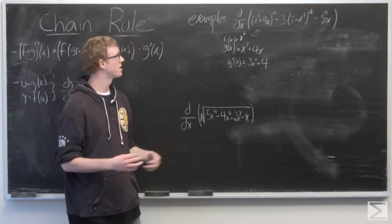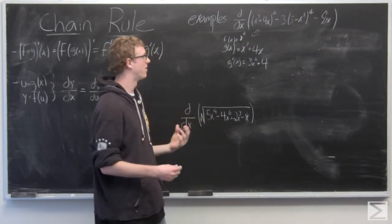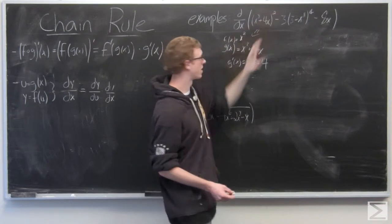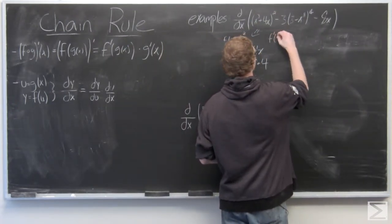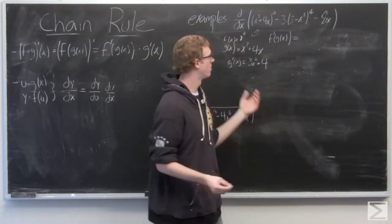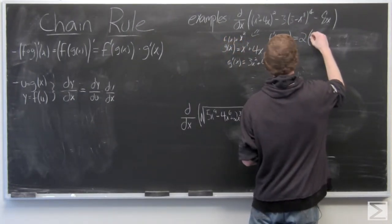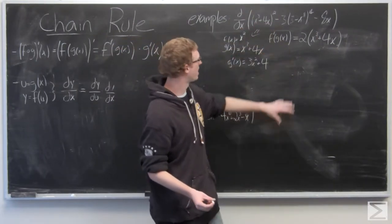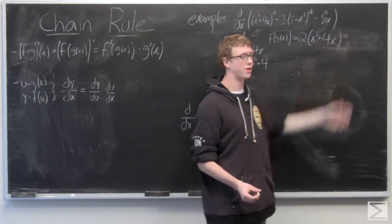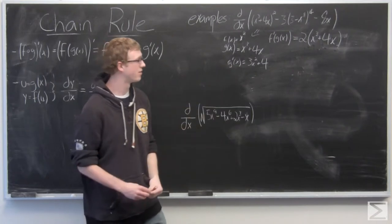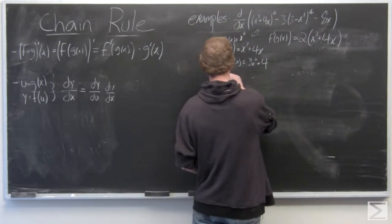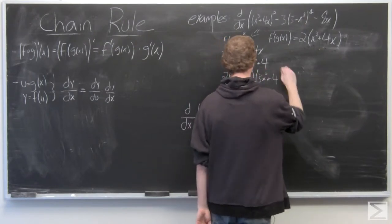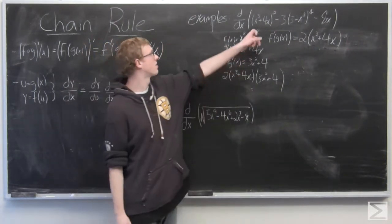Now f prime of g of x — the derivative of the entire function — is kind of confusing, but what that means is simply taking the derivative of this entire term. The derivative of this by itself, without taking the derivative of anything in the middle, is just 2 times x cubed plus 4x to the first. Then we multiply by g prime of x. So this is the result we get for the first term.